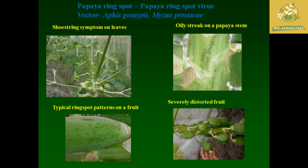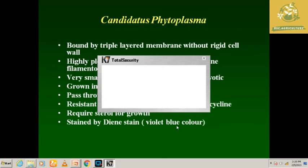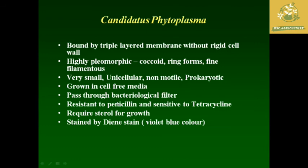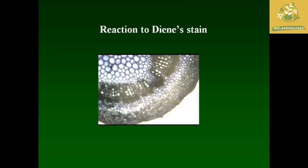Candidatus Phytoplasma is bounded by a triple layer membrane without a rigid cell wall. They are highly polymorphic: coccoid, ring forms, and fine filamentous. They are very small, unicellular, non-motile, and prokaryotic in nature, grown in cell-free media. They can easily pass through bacteriological filters because they are smaller than bacterial cells. They are resistant to penicillin but sensitive to tetracycline. They require sterol for their growth and are mainly stained by Dienes stain, which shows a blue color.